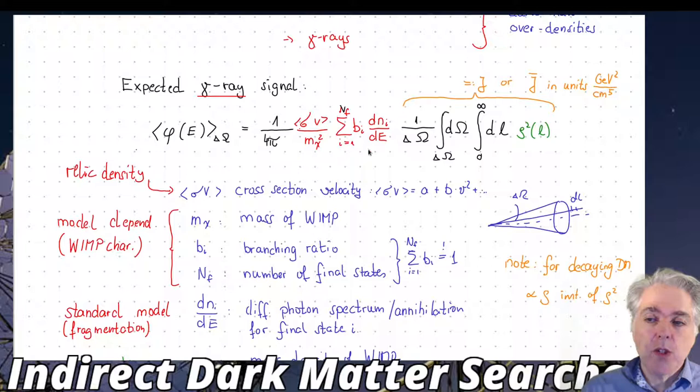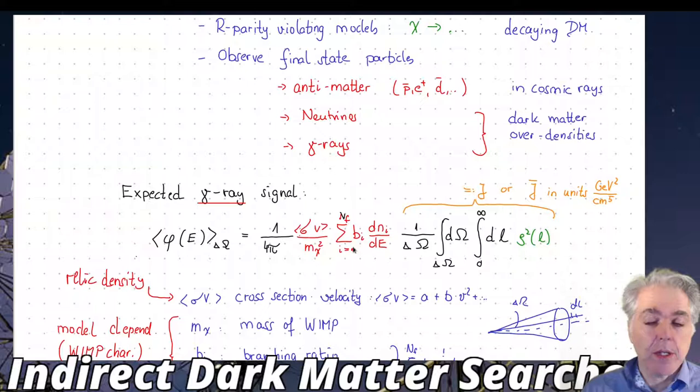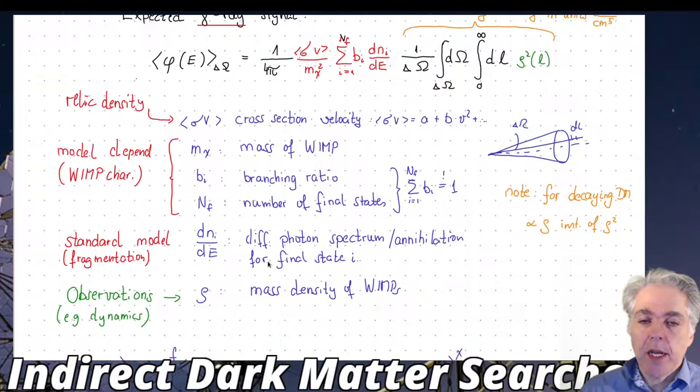Then we have a term which relates to the final state in which this annihilation proceeds. I introduced the branching ratio bi which gives the probability to see a particular final state, like b b-bar or W+ W- final state. For each final state I get a photon spectrum, the differential photon number per energy interval dN_i/dE, which is different for the different final states.